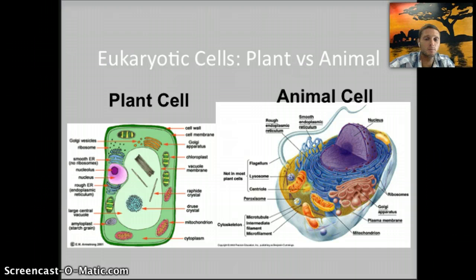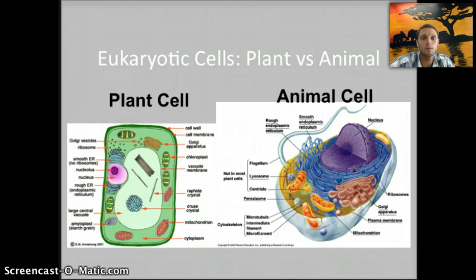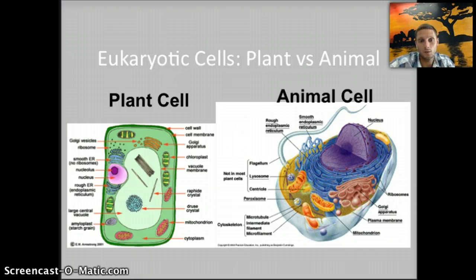One of the other big differences between plant and animal cells is that plant cells have chloroplasts. Chloroplasts are the organelles that carry out the process of photosynthesis, allowing plants to produce their own energy in the form of sugar — we'll learn about that process a little bit later. Animal cells lack chloroplasts, so animals have to ingest their energy by eating from another source, whether it be plants or another animal.